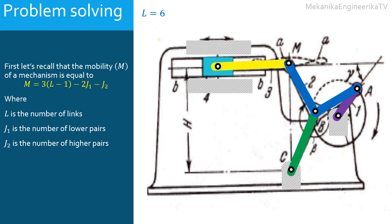In all, the mechanism involves one prismatic joint and six pin joints. Thus, J1 is here equal to seven.